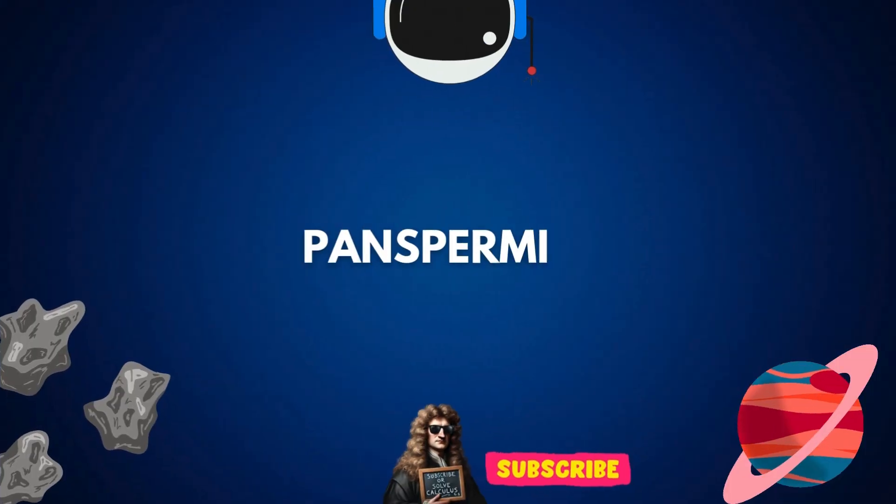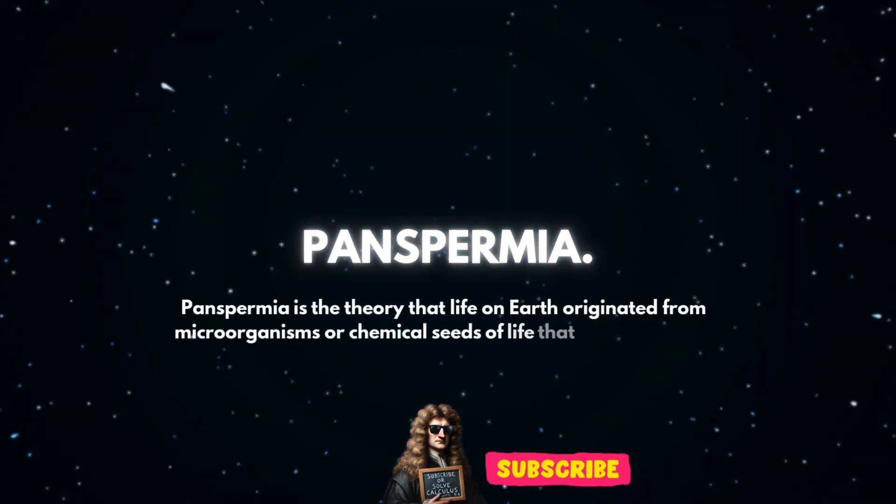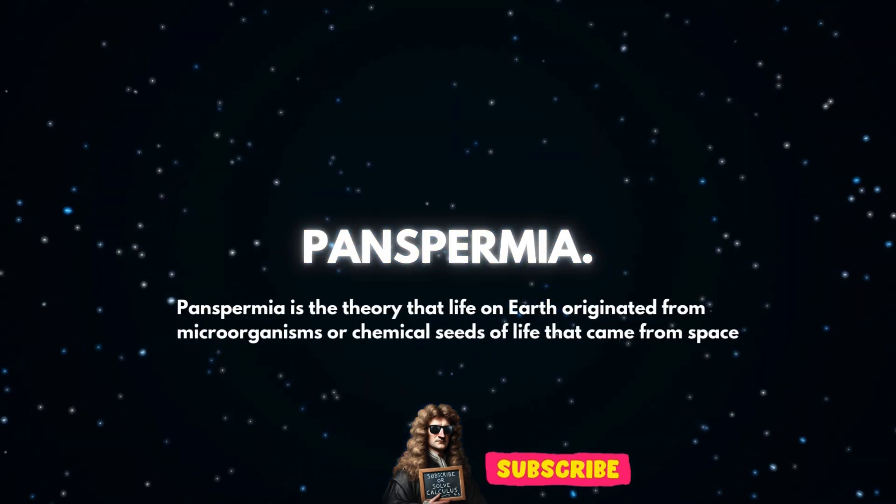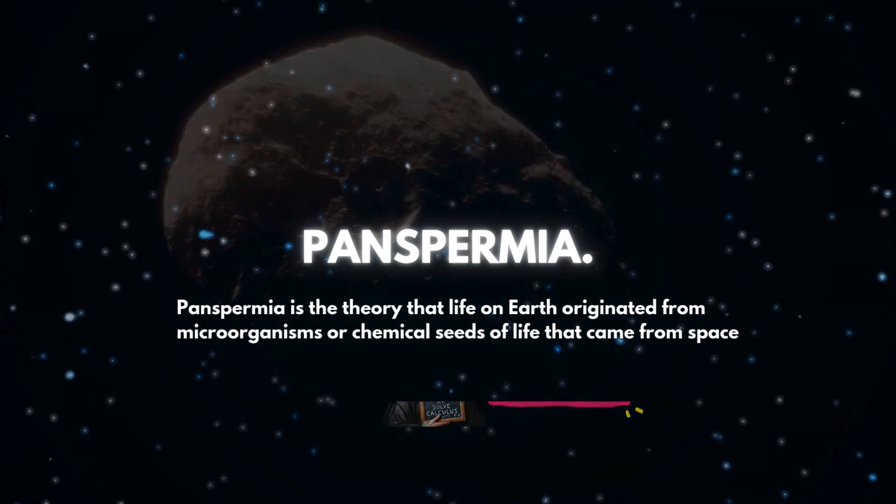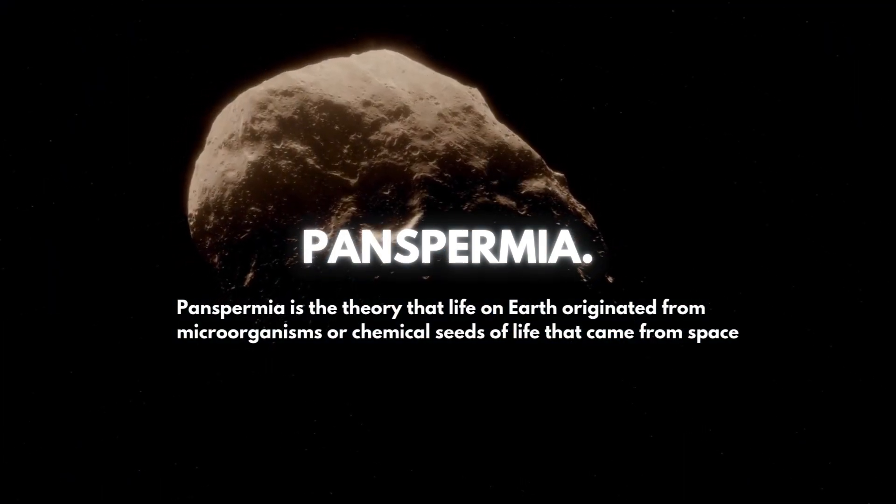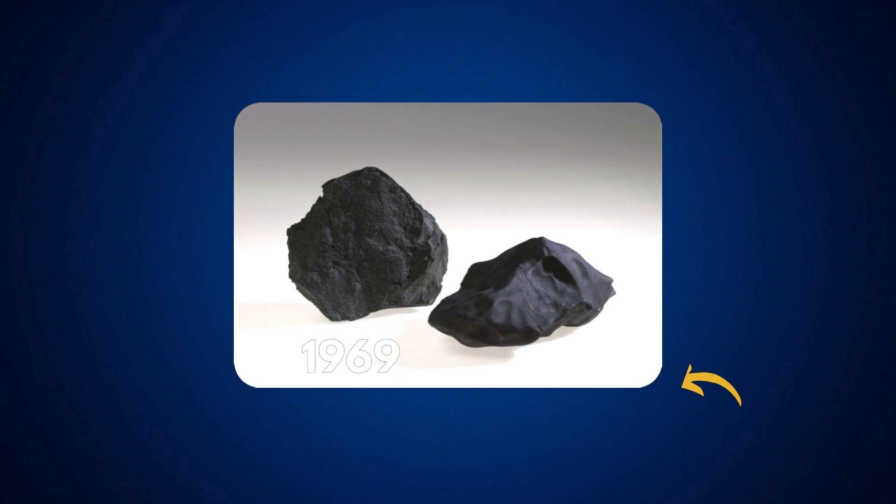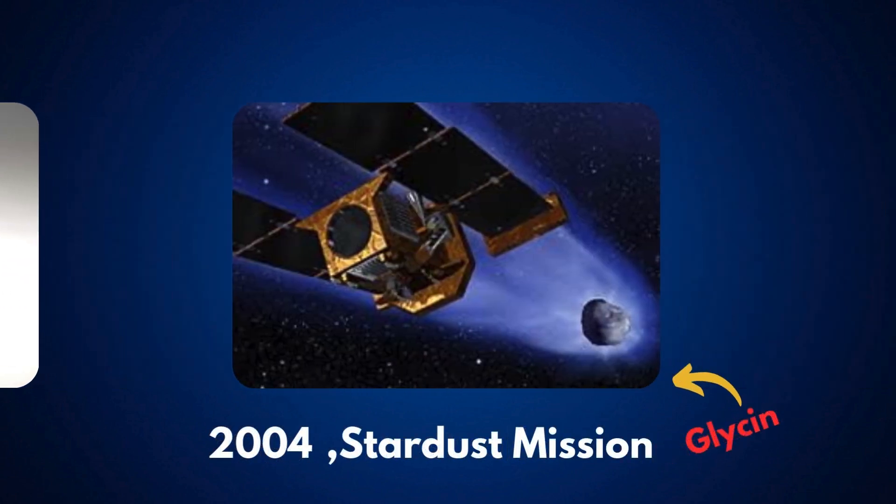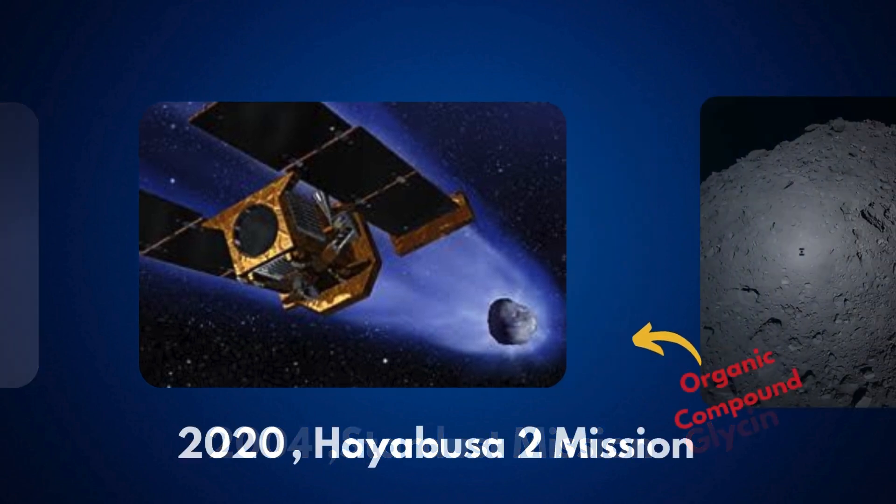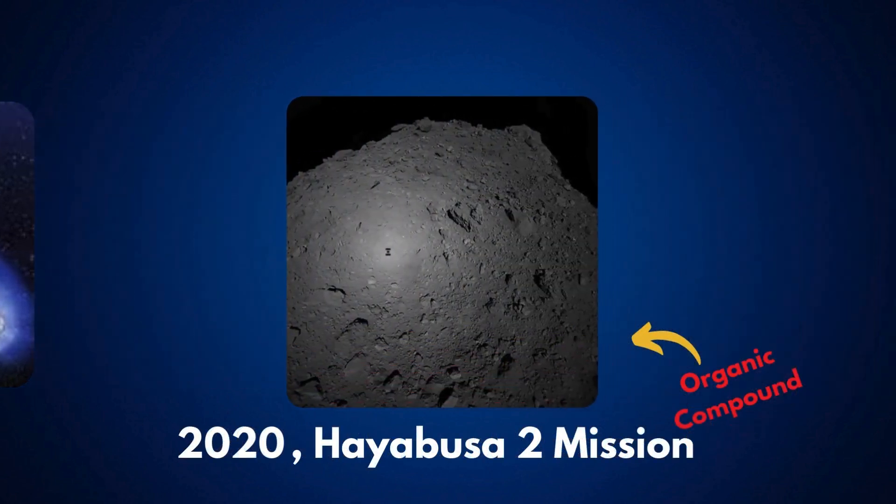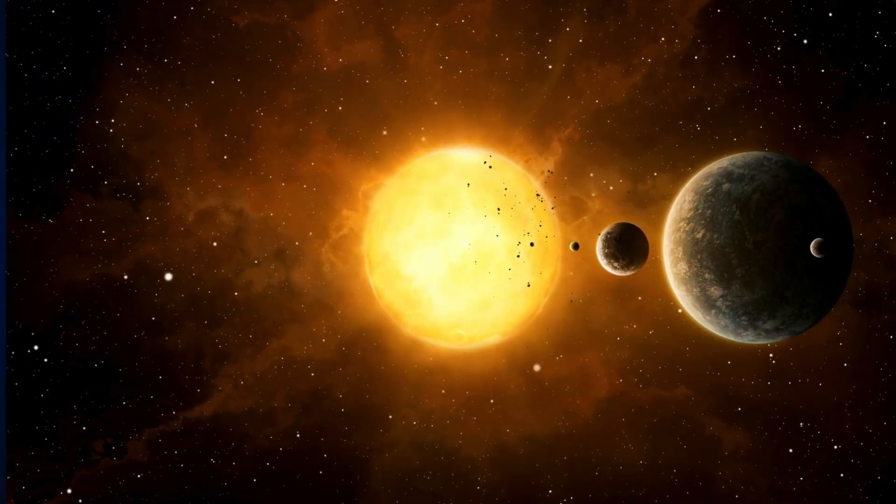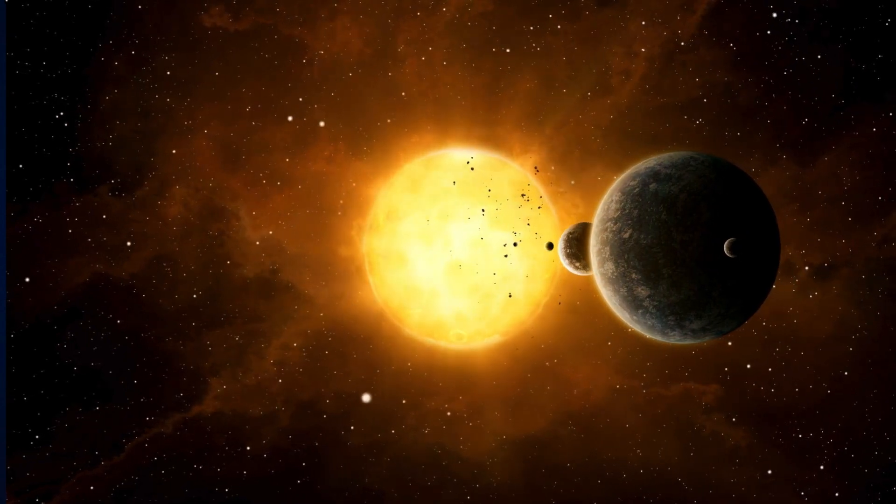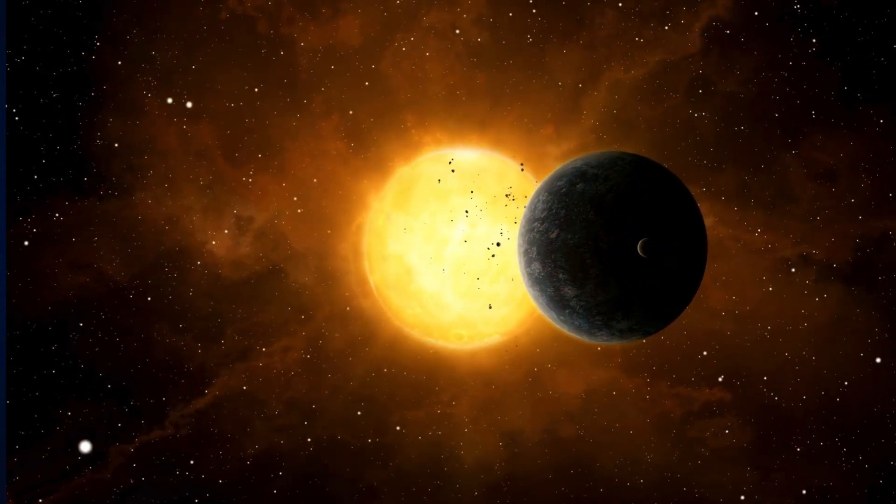Then there's the possibility that life didn't start on Earth at all. The idea of panspermia suggests that the building blocks of life came from space, carried by meteorites and comets. In 1969, a meteorite that landed in Australia was found to contain amino acids. In 2004, NASA's Stardust mission found glycine, an amino acid, in comet dust. And in 2020, Japanese scientists retrieved samples from an asteroid that contained organic compounds. Could it be that life's raw ingredients were drifting through space, waiting to land on a suitable planet?